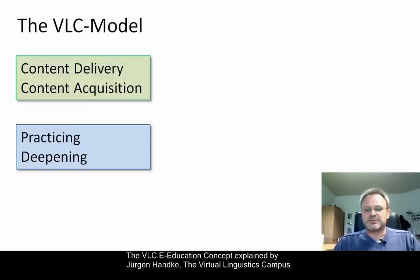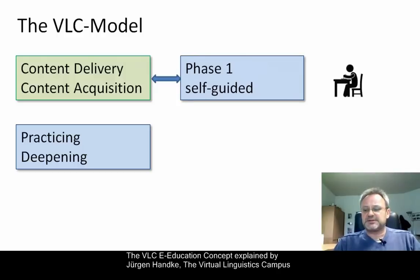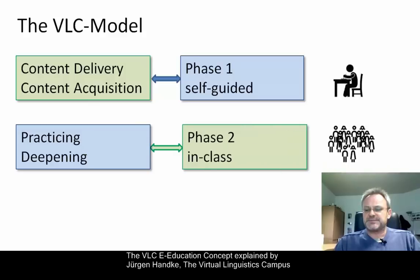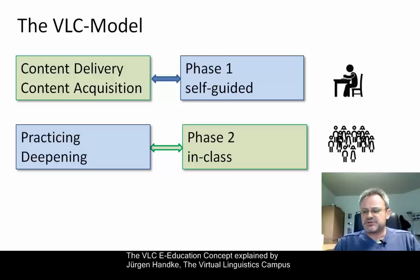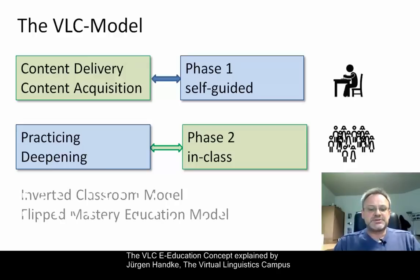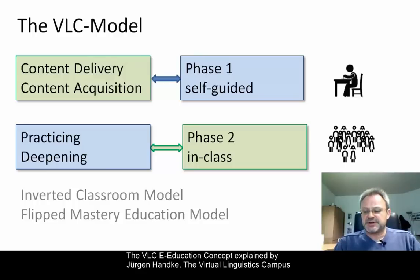Content acquisition is now self-guided, takes place first, and is done online. The additional in-class phase is now dedicated to practicing, rehearsing, discussion, analysis, etc. This means, prior to each in-class meeting, students must have worked through the online content of the respective unit. This approach is referred to as the inverted classroom model or the flipped mastery educational model.